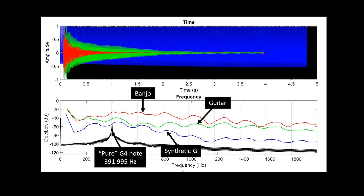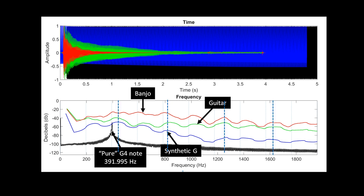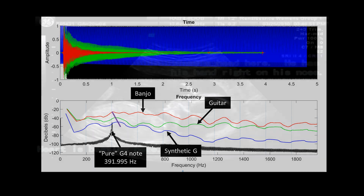Here are the first four banjo harmonics with subharmonics in the middle, the first four guitar harmonics with subharmonics, and synthetic G harmonics with subharmonics. You can see the banjo G peak appears to best match the pure G, with the guitar and synth not lining up exactly. Curious.